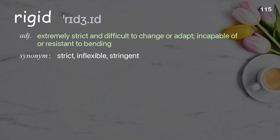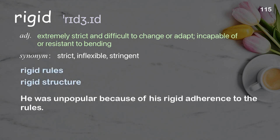Rigid: extremely strict and difficult to change or adapt; incapable of or resistant to bending. Examples: rigid rules, rigid structure. He was unpopular because of his rigid adherence to the rules.